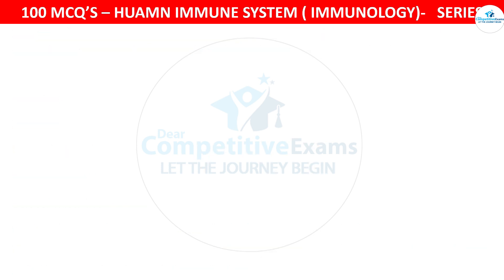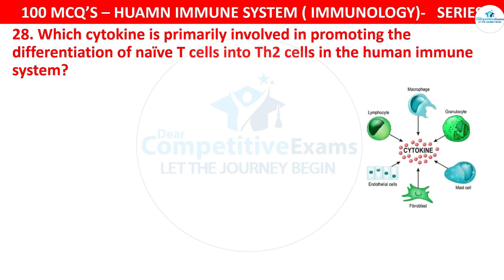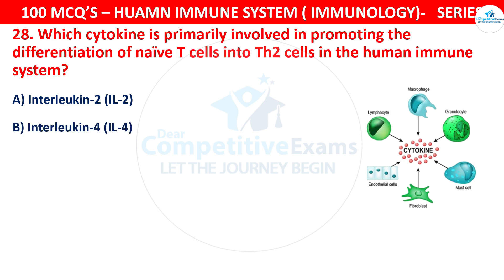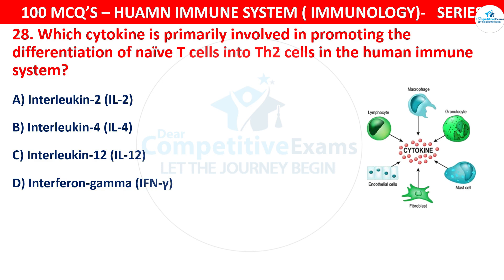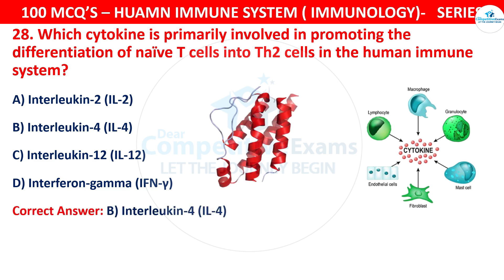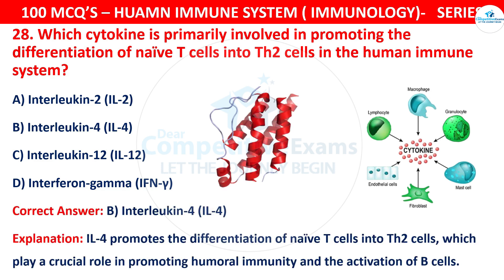Question 28: Which cytokine is primarily involved in promoting the differentiation of naive T cells into TH2 cells in the human immune system? The options are Interleukin-2, Interleukin-4, Interleukin-12, or Interferon-Gamma. The correct answer is B, that is Interleukin-4. IL-4 promotes the differentiation of naive T cells into TH2 cells, which play a crucial role in promoting humoral immunity and activation of B cells.